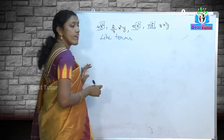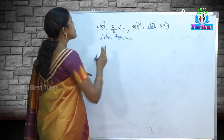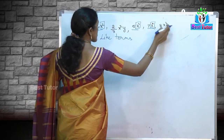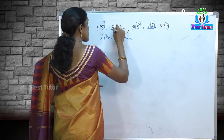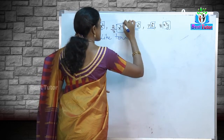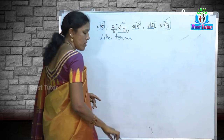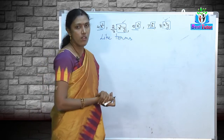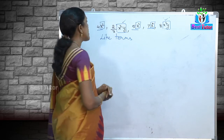Is there another set of like terms? Yes — 2/3 x²y and 8x²y both have x²y as the literal coefficient, so these two form a set of like terms.